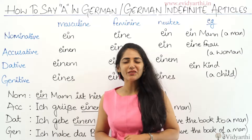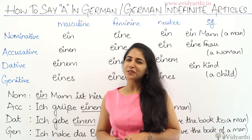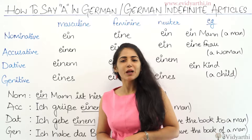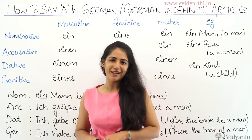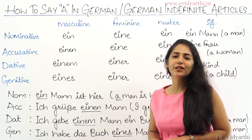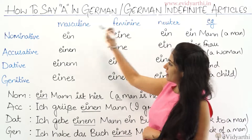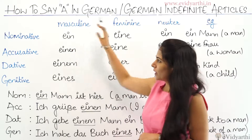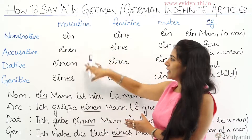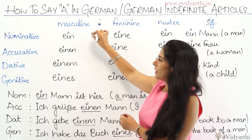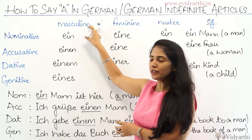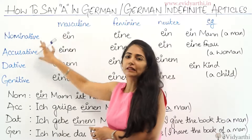This is Ajna from e-vidyagi.in. In this session you will learn how to use 'ein' in German language, also called German indefinite articles. This is 'ein'. As you know with all the articles, the ending depends on the gender and the cases.